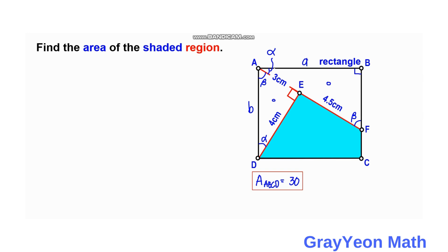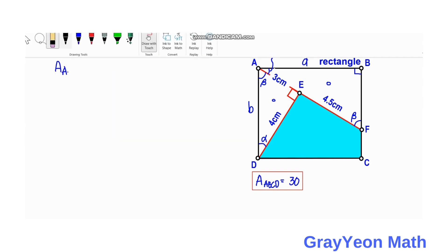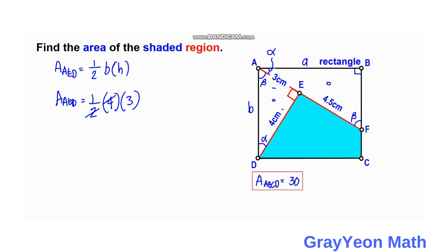Next, we find the area of triangle AED. The area of AED equals one half times base times height, which is 1.5 times 4 times 3. We divide 4 by 2 to get 2, so the area of triangle AED equals 6 square units.